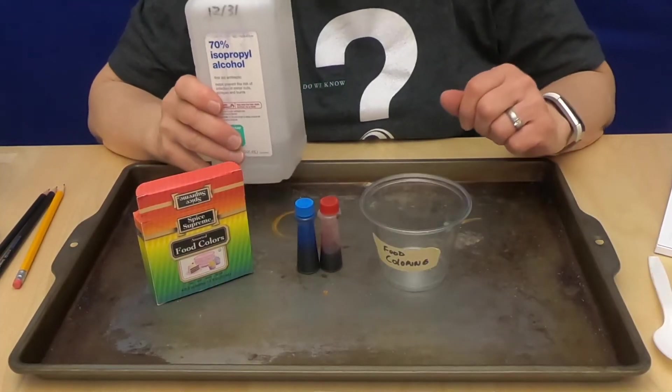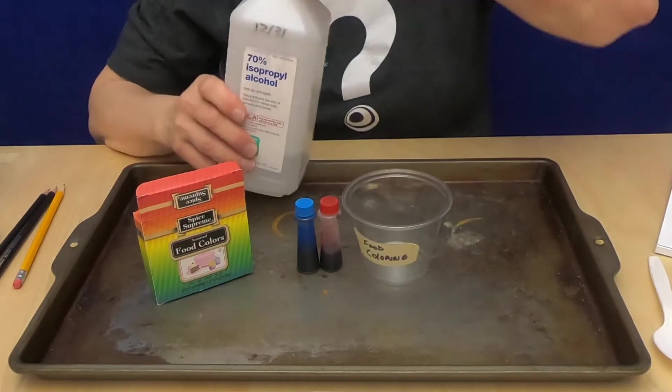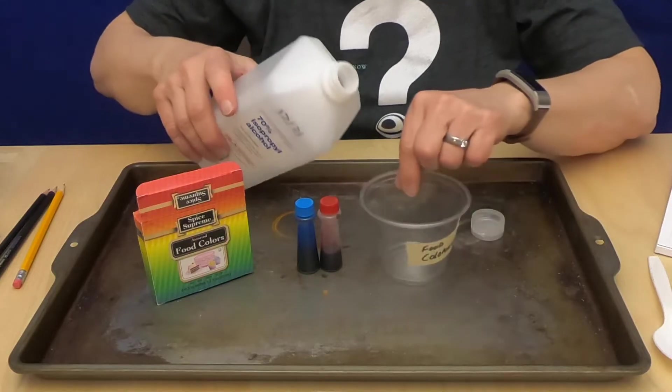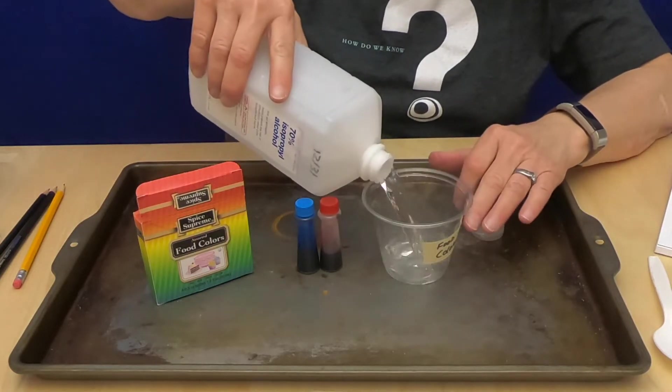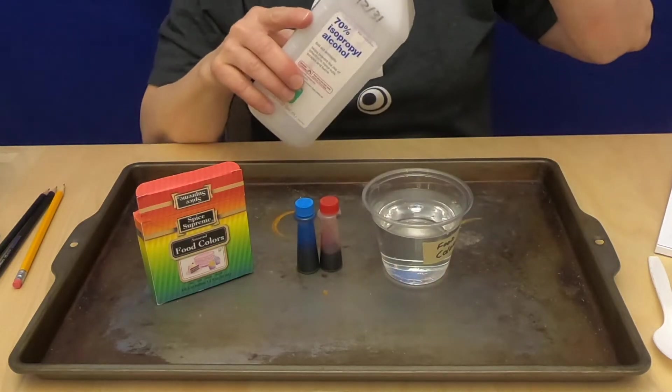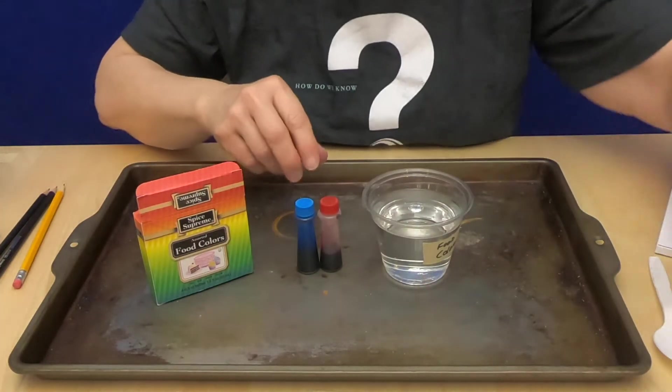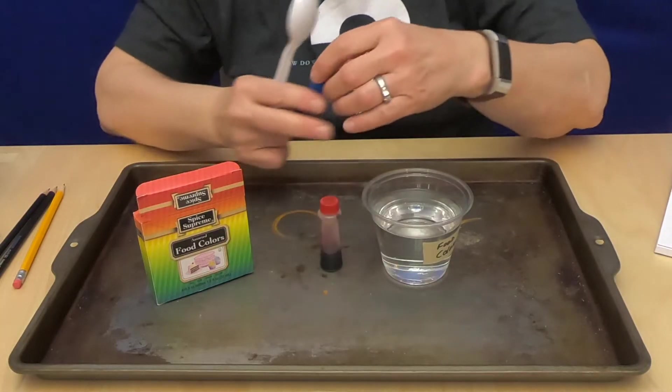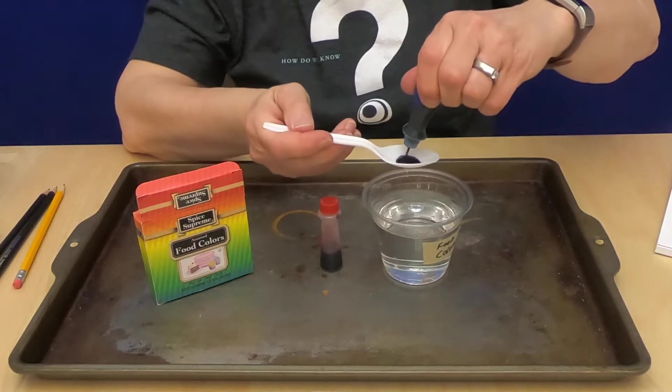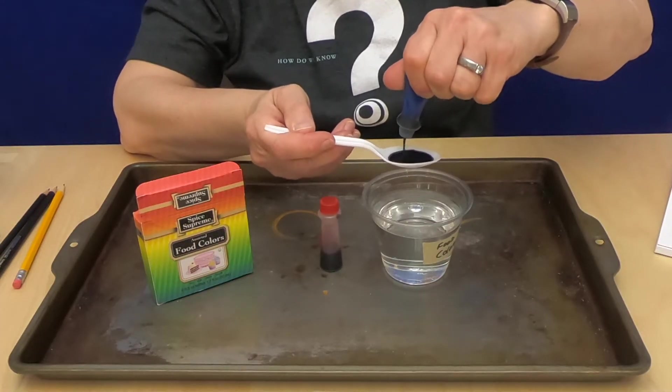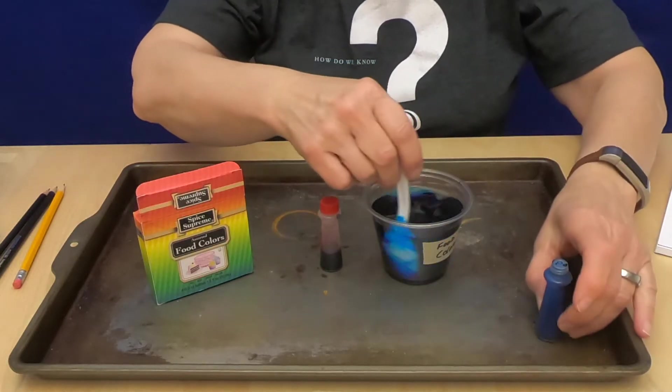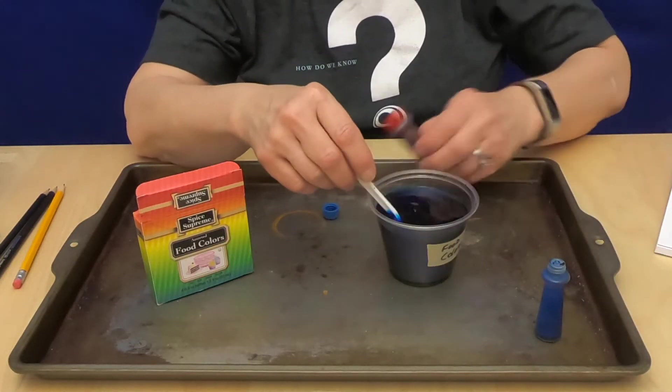The first thing I'm going to do is make up my solution of dyes. I'm going to take my cup labeled food coloring, fill it not quite to the top with isopropyl alcohol. Then I need one teaspoon each of red and blue. Just squeeze out a teaspoonful of each color into your teaspoon, drop it into the solution, mix it up and do the same with the red.